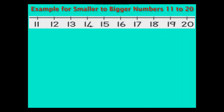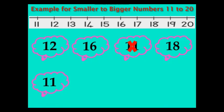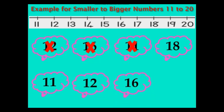Let us see some more examples. 12, 16, 11 and 18. The smallest of these numbers is number 11. The next small number after 11 is 12. The next small number after 12 is 16. And the biggest number here is 18.